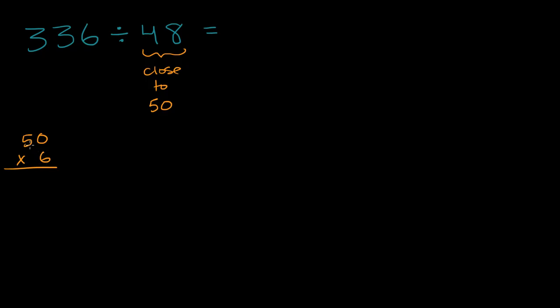If I were to say 50 times six, that's the same thing as five times six times 10, which is 300. If I say 50 times seven, that's going to be 350. Five times seven is 35, and then you're multiplying that by 10. But this number is someplace in between 300 and 350. So my candidates for what this is going to be, maybe this is six, maybe this is seven. And what I would do is I would try out each of them.